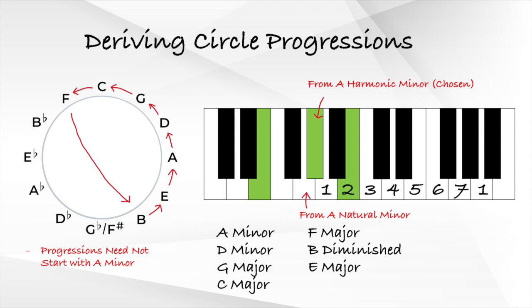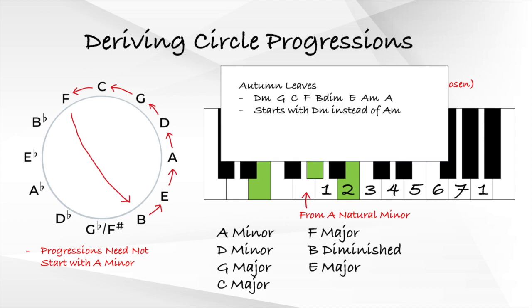The second thing we need to know is that circle progressions need not necessarily start with an A minor. For the case of Autumn Leaves, the starting chord is a D minor chord instead of an A minor chord. However, it continues to follow the diatonic circle of fifths after the D minor chord, moving on to the G major chord, the C major chord, and so on.